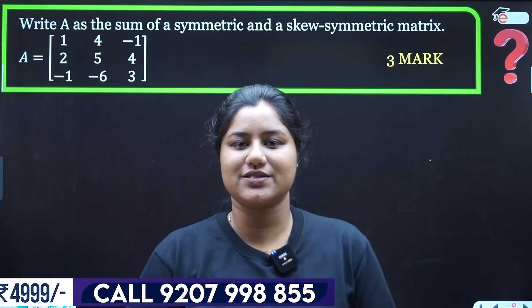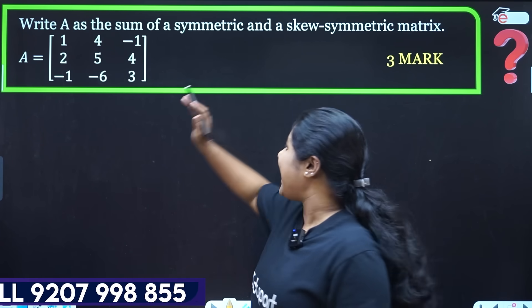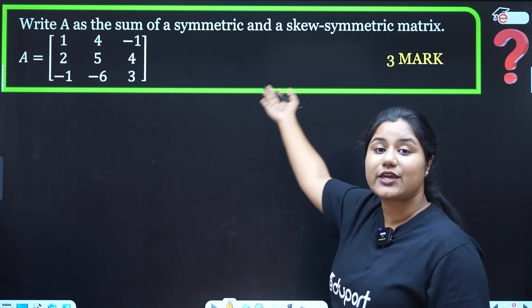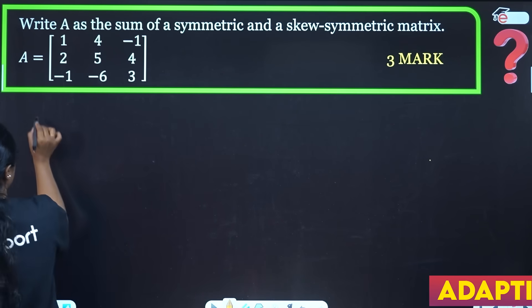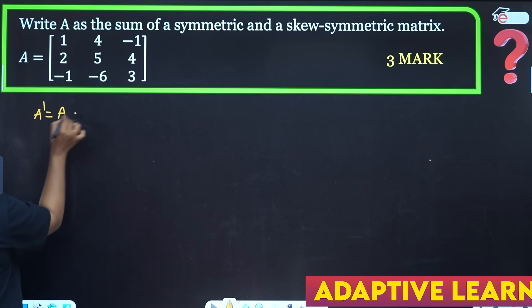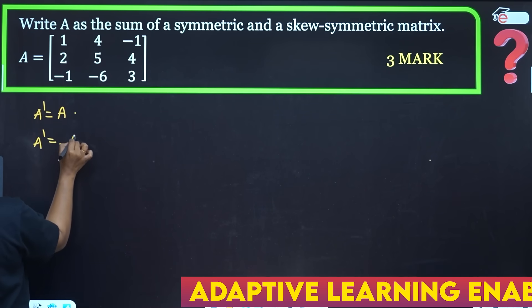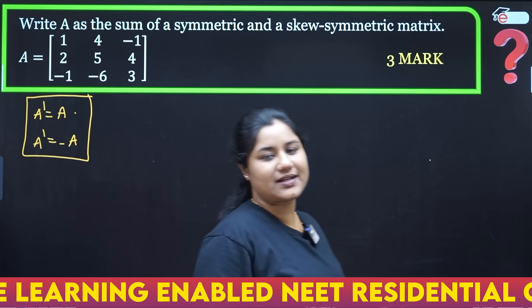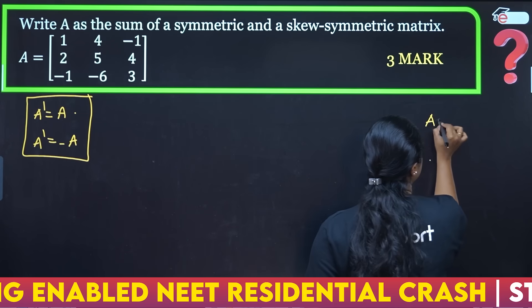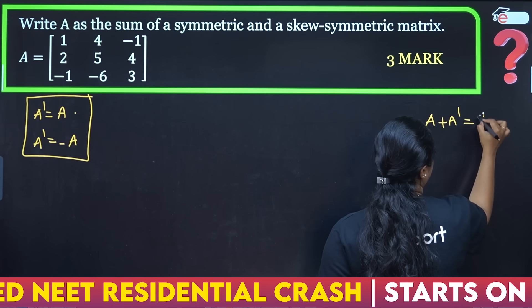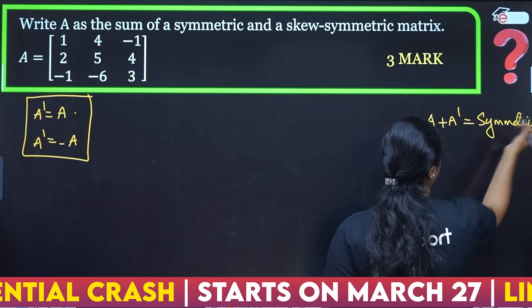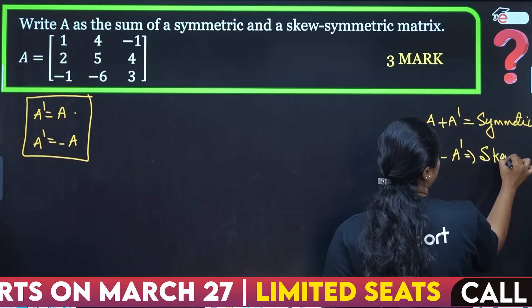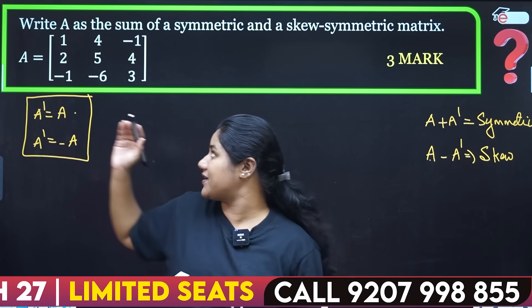In all question papers, you will find: express the matrix A as the sum of a symmetric and skew-symmetric matrix. For the symmetric matrix, A plus A-transpose gives a symmetric result. A minus A-transpose gives skew-symmetric. If you get this result, you solve this question.